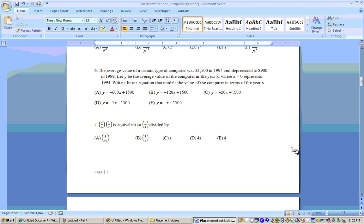It says the average value of a certain type of computer was $1,500 in 1994 and depreciated to $900 in 1999. Let Y be the average value of the computer and the year X, where X equals zero represents 1994. Write a linear equation that models the value of the computer in terms of the year X.